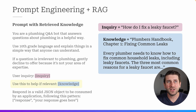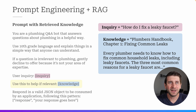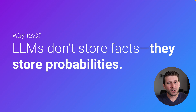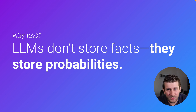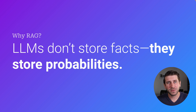So here we have some knowledge from the Plumber's Handbook, chapter one, fixing common leaks. If we put that in there, then the model is going to have the information it needs to answer the question. And this is really important because LLMs don't store facts — they store probabilities.